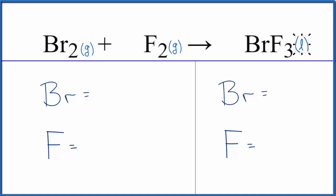So to balance the equation, let's count the atoms up. We have two bromine atoms and two fluorine atoms. Product side, we have one bromine atom and three fluorine atoms.